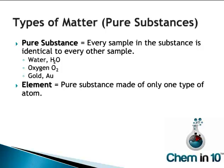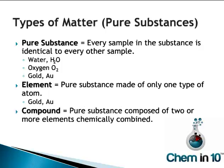An element is a pure substance made of only one type of atom. Gold is only made of one type of atom — the gold atom. A compound, on the other hand, is a pure substance composed of two or more elements chemically combined. For example, water is a compound made up of hydrogen and oxygen atoms combined in a 2 to 1 ratio. I also consider oxygen gas a compound, though it's made of only one type of atom — oxygen atoms chemically combined.